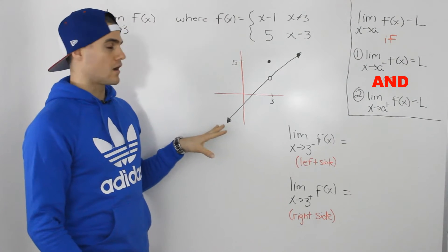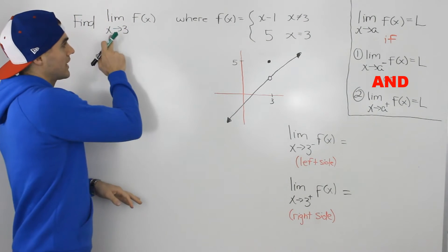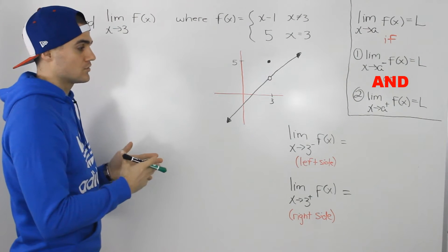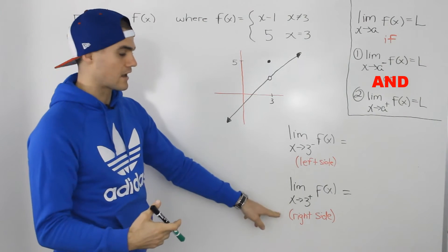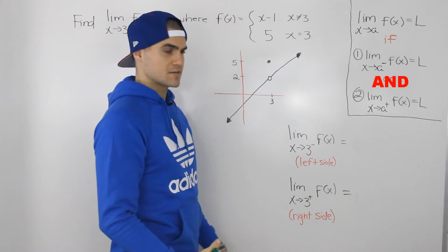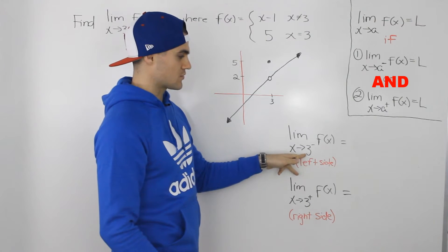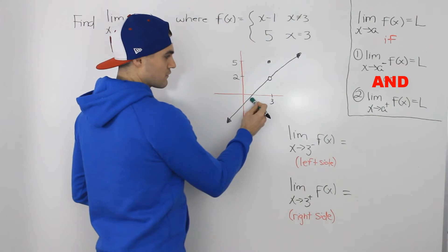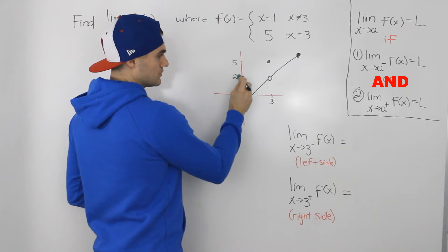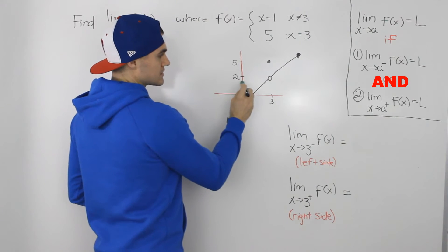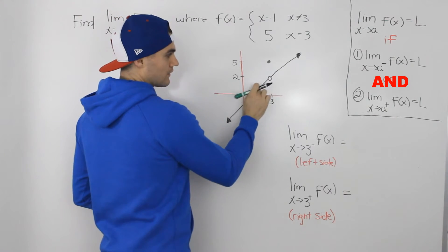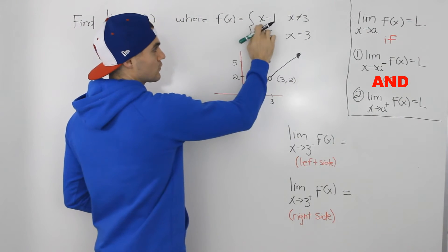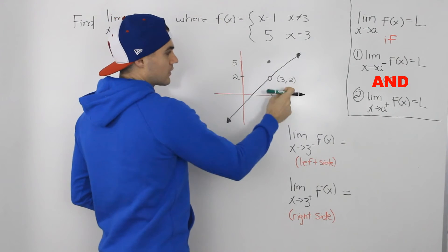Now that we have the graph of f of x, we can proceed to find the limit as x approaches 3 of f of x. To find the limit as x approaches a certain value, we have to approach that value from both the left side and the right side. So if we find the limit as x approaches 3 from the negative side of this function, as we're approaching an x value of 3, the y value is approaching 2, because this hole on this line occurs at coordinates 3 and 2 — if we plug in 3 for x minus 1, we get a y value of 2.